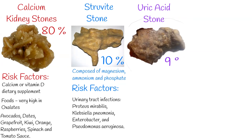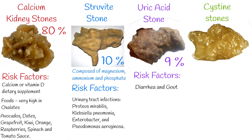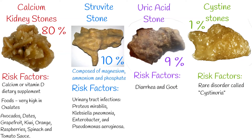The third type of stones are uric acid stones, which account for 9% of cases. Risk factors for uric acid stones include chronic diarrhea and gout. The fourth type is cystine stones, which account for only 1% of kidney stones.